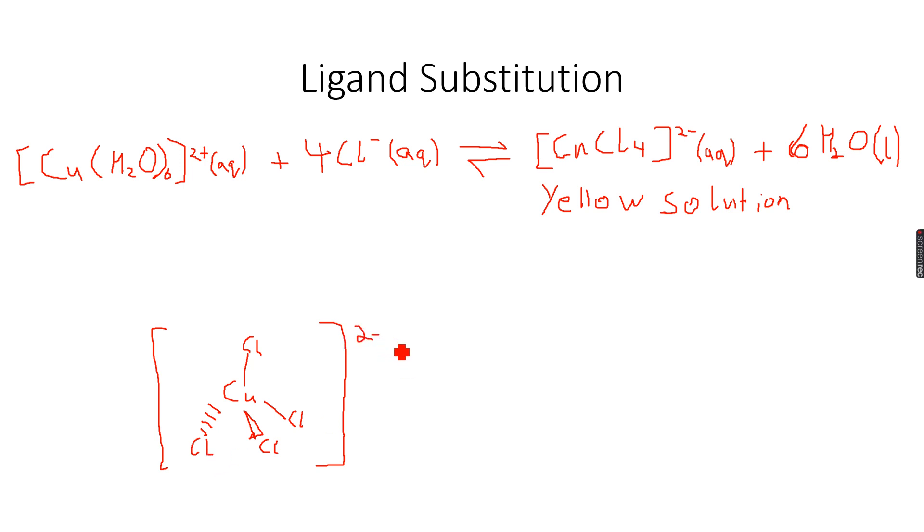2- charge, because this is 4 Cl-, so a total charge of 4-. This has a total charge of 2+, so 2 minus 4 is -2, giving an overall charge of 2-. Again, it's a reversible reaction. All ligand substitution reactions are reversible.